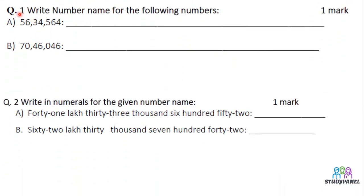Question 1: Write the number name for the following numbers. Here we can see two numbers are given and we have to write the number name for these numbers. First of all, we have to identify the various places of these numbers.